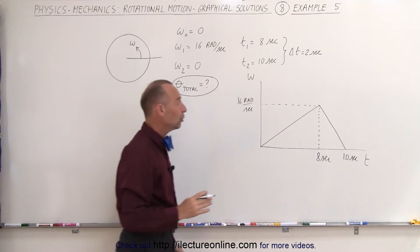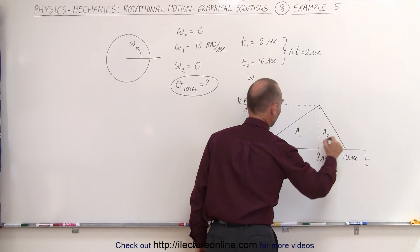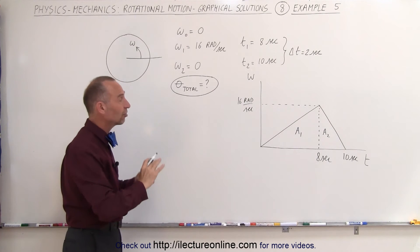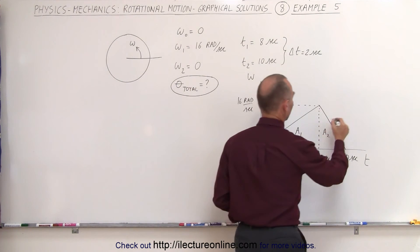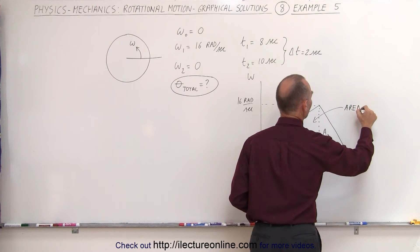Notice we now have two areas—area one and area two—representing two different triangles. We know that area is equal to the angular distance covered.